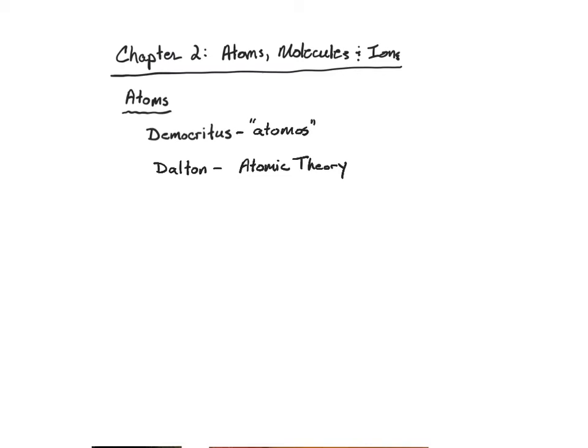So there were four different hypotheses that were built into this. The first hypothesis was that all elements are composed of tiny particles called atoms, which is very similar to Democritus' statement.